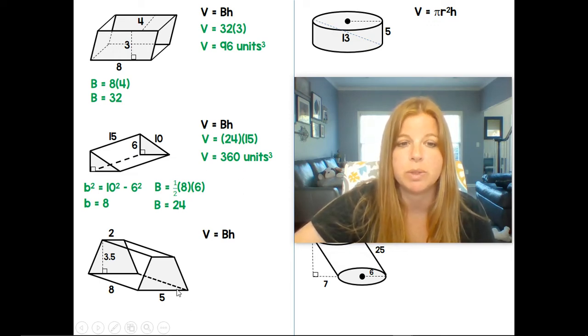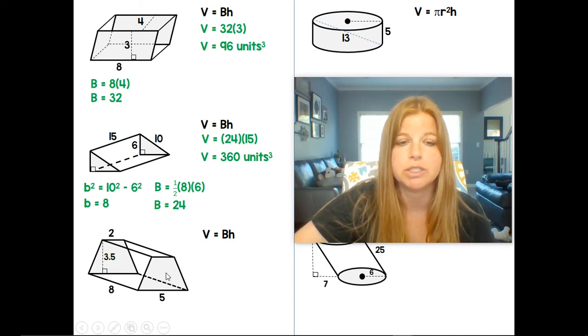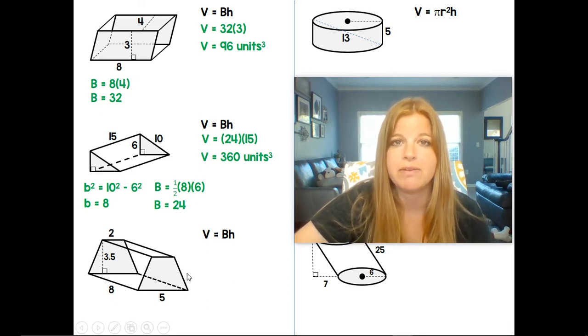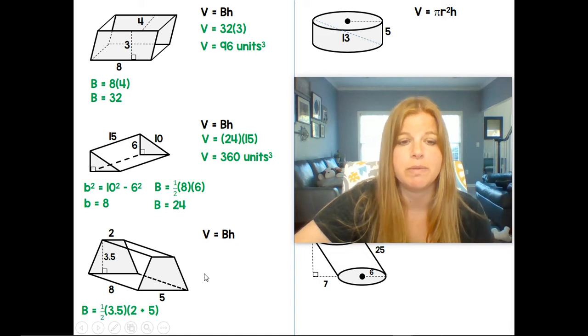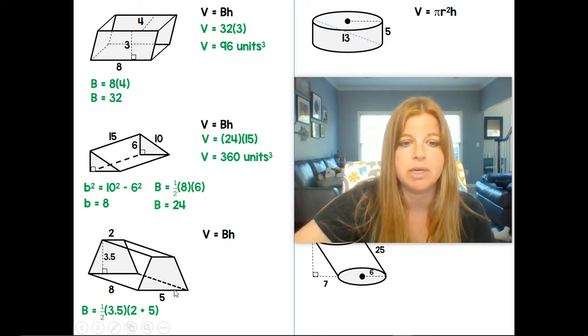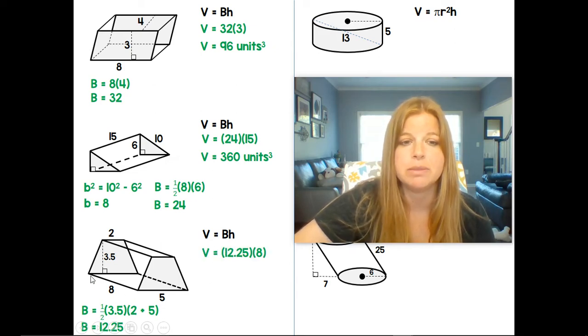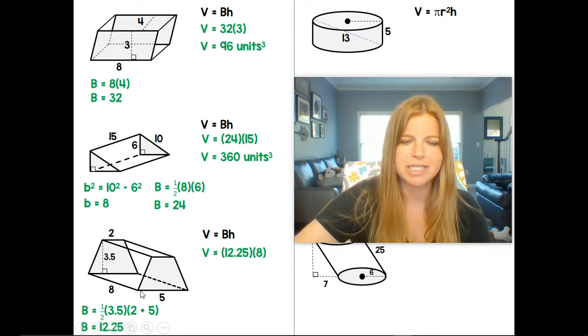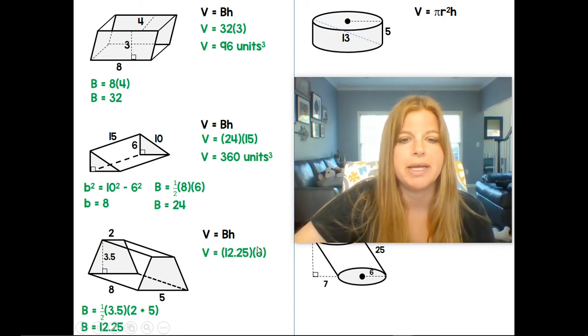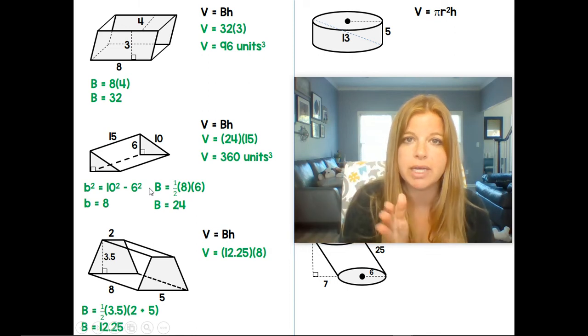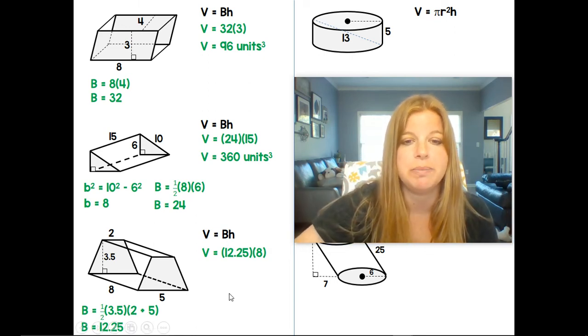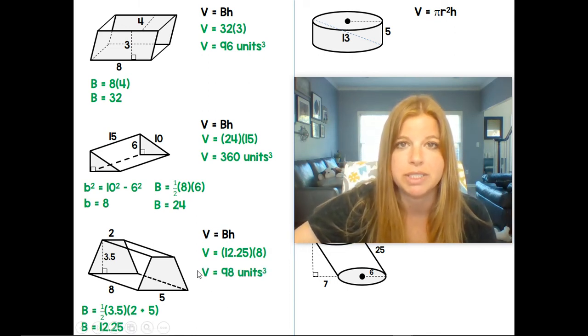The last one here is a trapezoidal prism. So I need to find the area of the trapezoid. Remember, area of the trapezoid is 1 half times the height times the sum of the bases. So 1 half times the height of the trapezoidal base times the sum of the bases of 2 and 5. That ends up giving me 12.25. Then I need to multiply that base by the height of the prism, which is 8 units. Kind of looks like a gold bar. And it's the same idea here. The height is not always vertical. The height is the distance between the bases. And I get 98 units cubed.